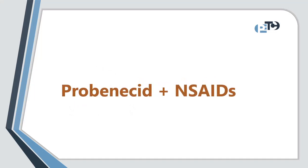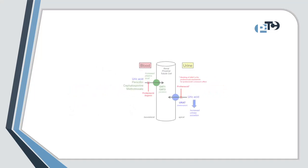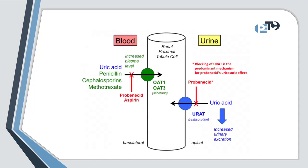Hello everyone. The interaction between probenecid and NSAIDs. Probenecid is a uricosuric agent that is primarily used to treat gout by increasing the excretion of uric acid.